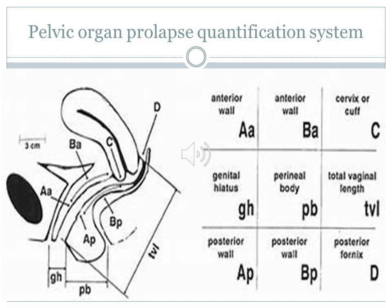The Pelvic Organ Prolapse Quantification system, POP-Q, is the system we use to identify the degree of prolapse. There are nine main points: in the anterior wall, two points Aa and Ba; in the posterior wall, two points Ap and Bp; point C is the cervix; point D is the posterior fornix; and then genital hiatus, perineal body, and total vaginal length.